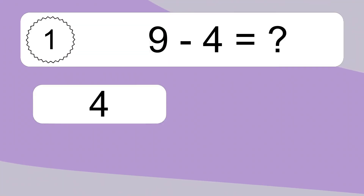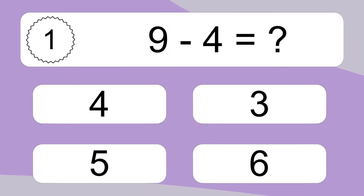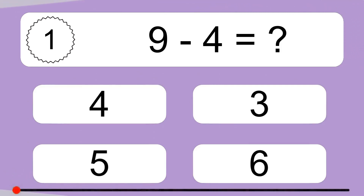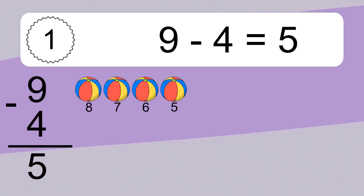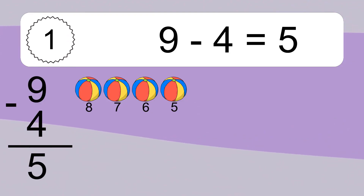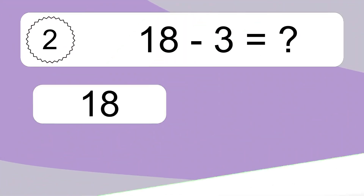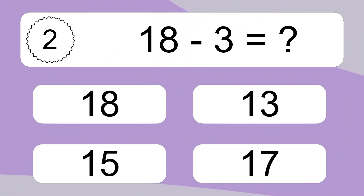9 minus 4 equals what? 9 minus 4 equals 5. Let's count it: 8, 7, 6, 5.